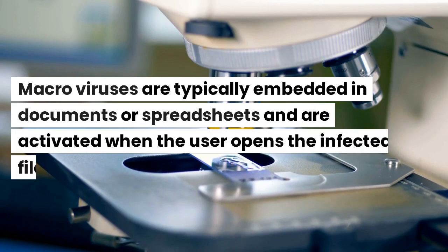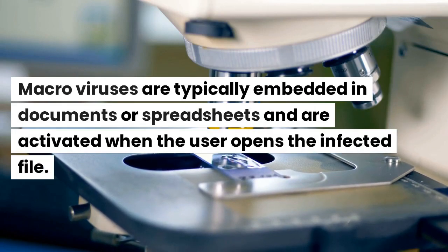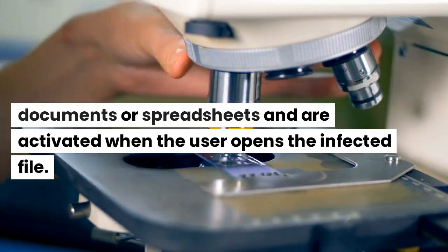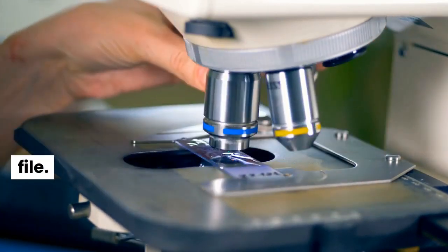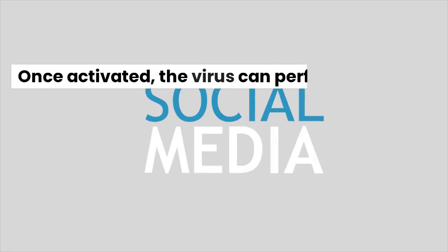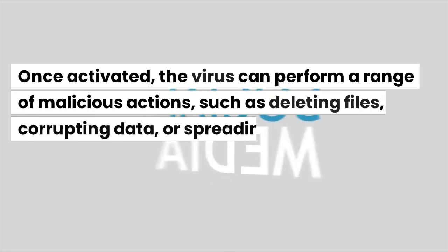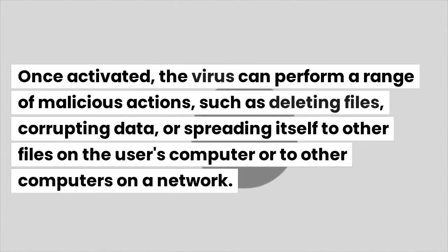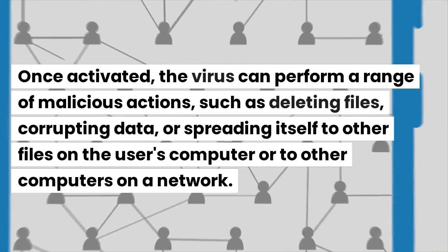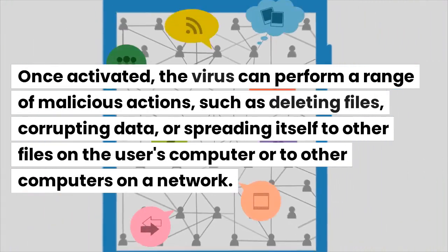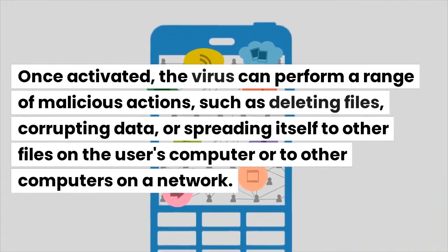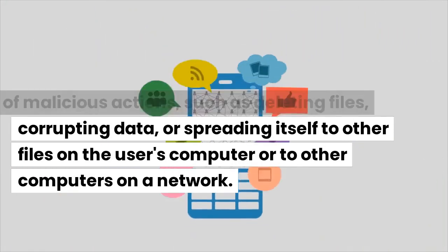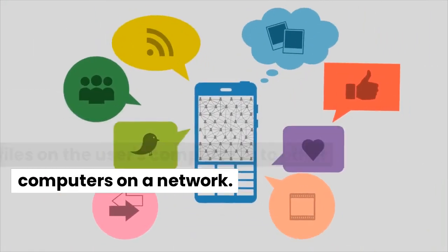Macro viruses are typically embedded in documents or spreadsheets and are activated when the user opens the infected file. Once activated, the virus can perform a range of malicious actions, such as deleting files, corrupting data, or spreading itself to other files on the user's computer or to other computers on a network.